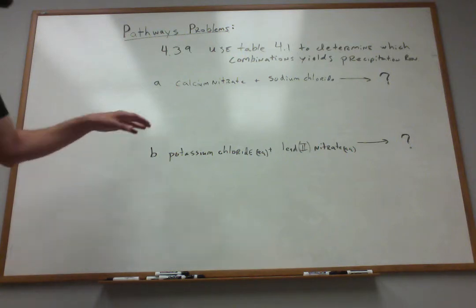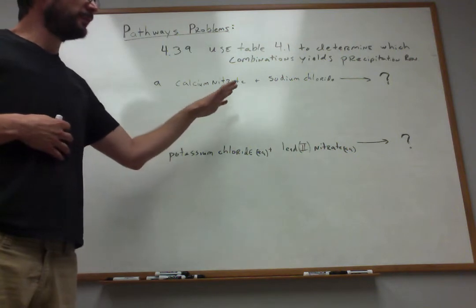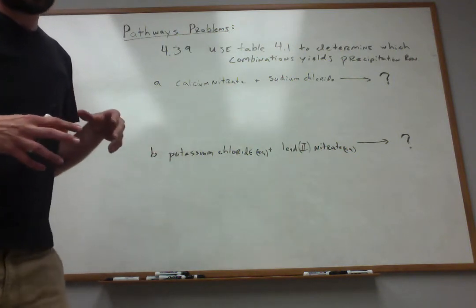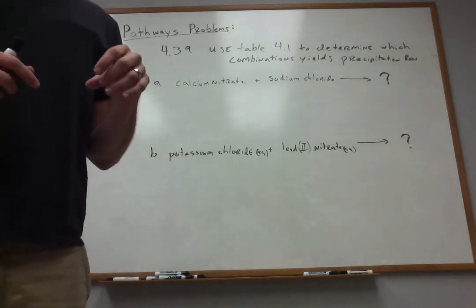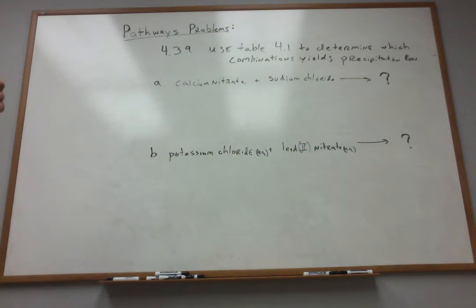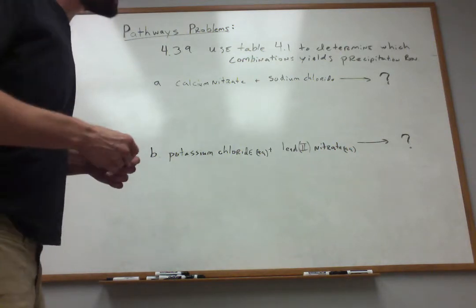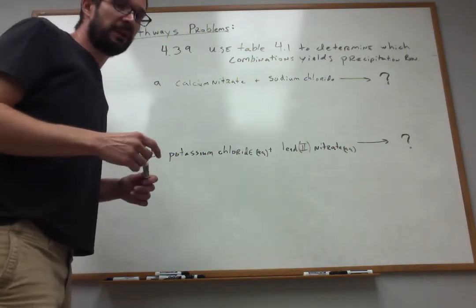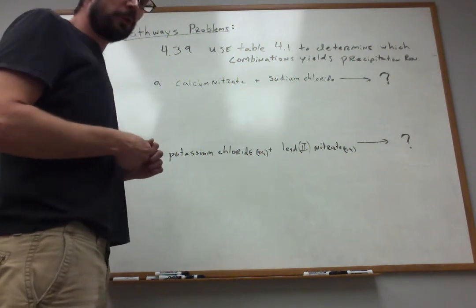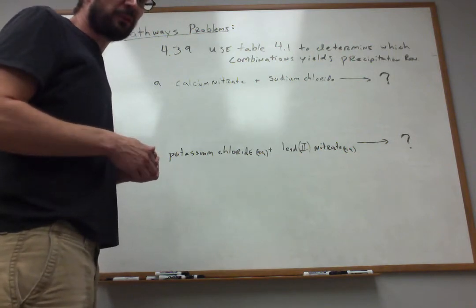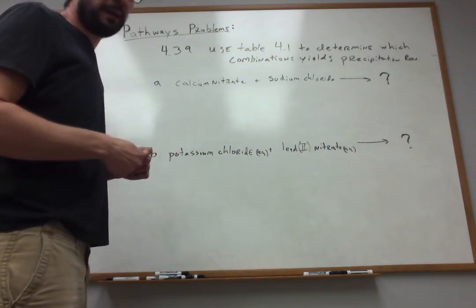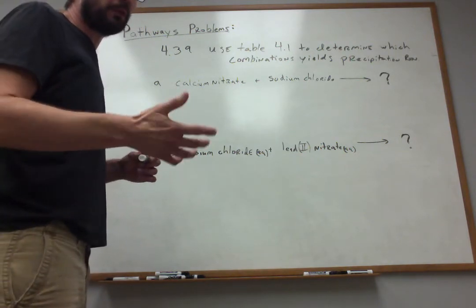The first equation is calcium nitrate plus sodium chloride. What you need to know about precipitation reactions is that all this chemistry is going to occur in the aqueous phase — 100% of it. We're going to consider aqueous phase precipitation reactions, meaning it takes place in water. Before we get to that, let's write the equation out in chemical formula terms.